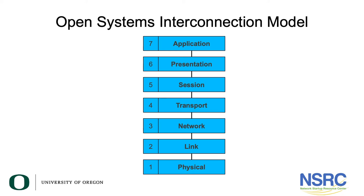Layer two is what we use for building local area networks or LANs. Layer three is the network layer or inter-network layer. Its job is to combine multiple layer two networks together so that data can flow from one network to another network to reach its final destination, and it's layer three that allows us to build a global scale WAN — in other words, the internet.